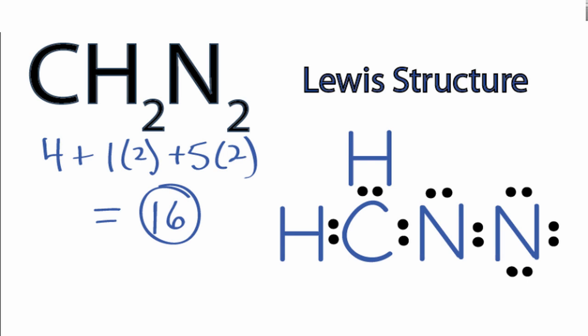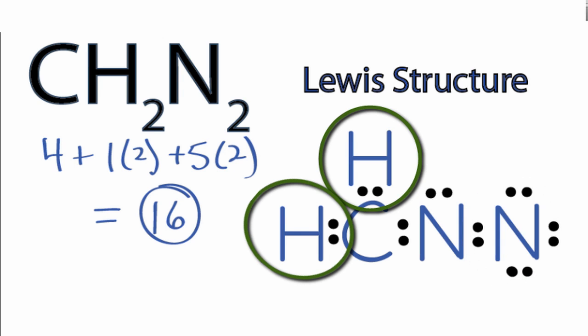16, so we've used all 16 valence electrons. You can see that the nitrogen on the end has 8 valence electrons, and both of the hydrogens have 2, so the outer shells are full for those atoms.